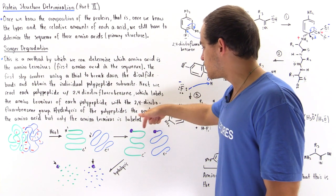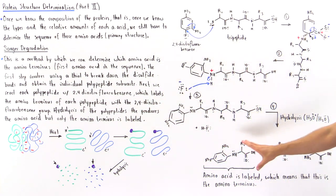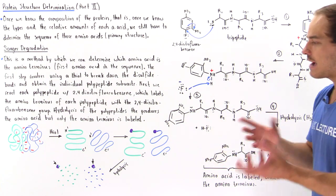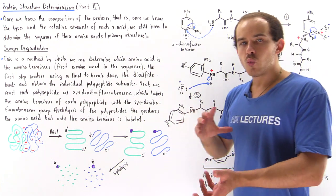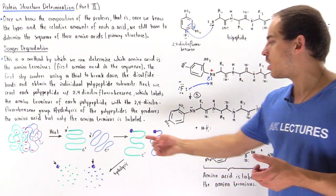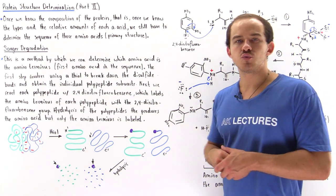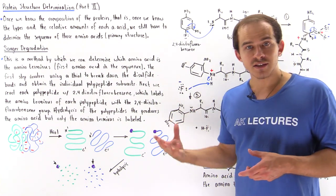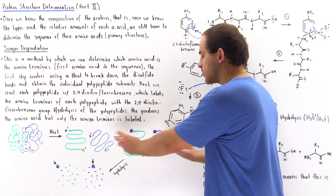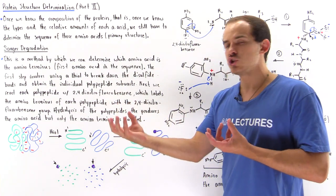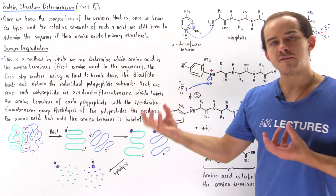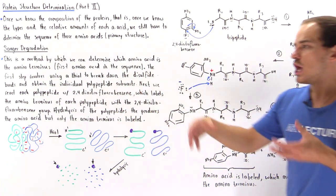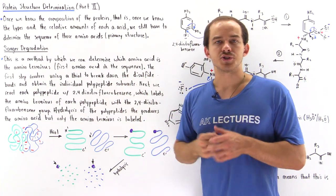Of course, in this case we have two polypeptides, so we would have two such labeled molecules. We can determine which labeled molecule belongs to which chain by separating the two polypeptides into two different beakers and then conducting these experiments in those separate beakers.